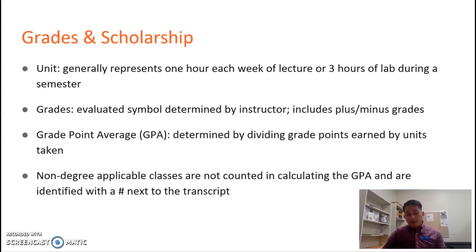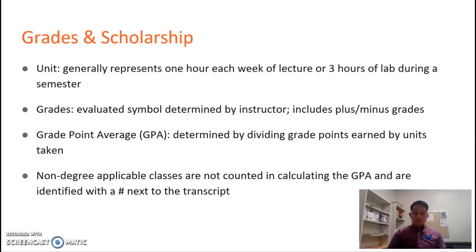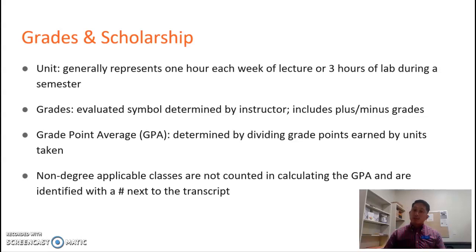For the class with an A, which is also three units, it's four grade points for an A times three units, giving twelve grade points. So the student with the B has nine grade points and for the A they have twelve grade points. You add up those grade points — that's twenty-one grade points — and divide by the number of units, which is six. Twenty-one grade points divided by six units equals a grade point average of 3.5.